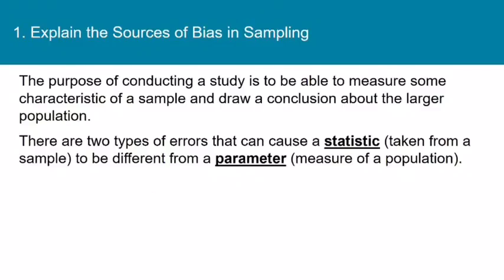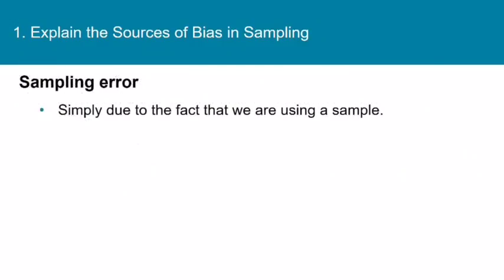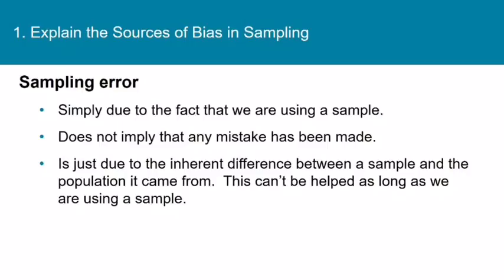There are two types of errors that can cause a statistic taken from a sample to be different from a parameter, which is a measure of a population. First, sampling error — this is simply due to the fact that we are using a sample instead of measuring the actual population. It doesn't mean that we've made a mistake or done anything wrong. It's just because of the inherent difference between a sample and the population it came from. It can't be helped.